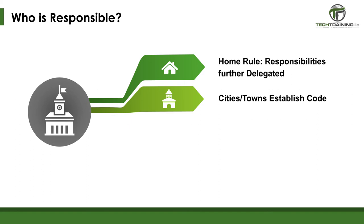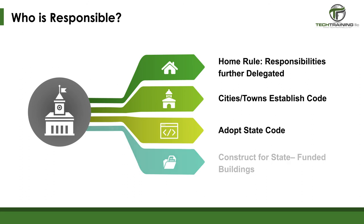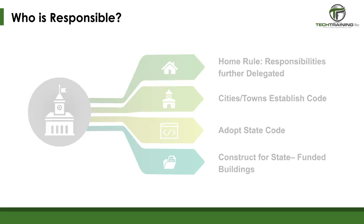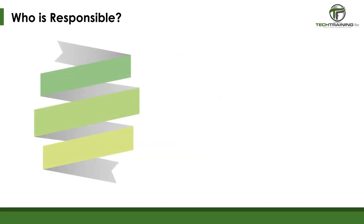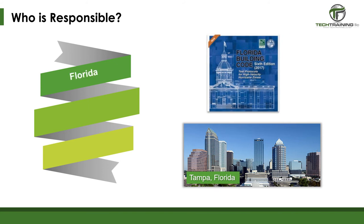In most cases, a city or county is not required to adopt a local code; they must at least adopt the IBC, IRC, etc. Almost all states require that the state code be implemented for any state-funded or partially funded buildings. Now, just to demonstrate the differences, let's take a look at a few states: Florida, Arizona, and Massachusetts.